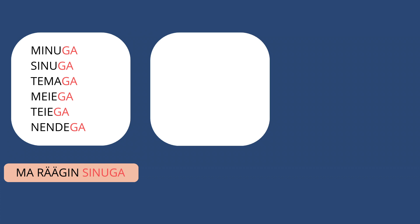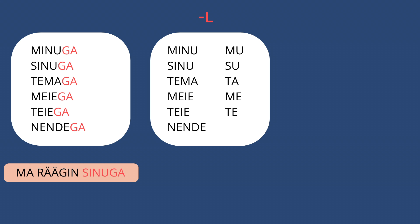Now let's see how to say that you have something. We don't really use the verb 'have' in Estonian. Instead we say that the thing is 'on somebody' — on a person. 'On' is the letter L at the end of the word. So let's bring the possessives here and add an L: 'minul', 'mul', 'sinul', 'sul', 'temal', 'tal'.